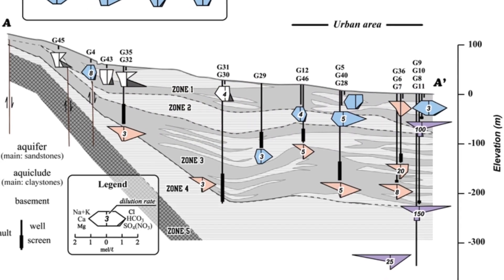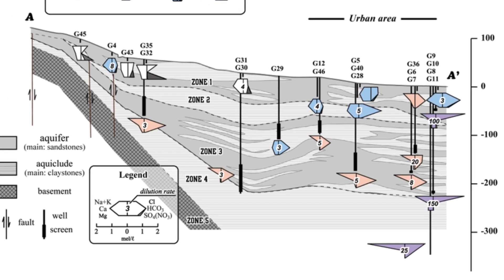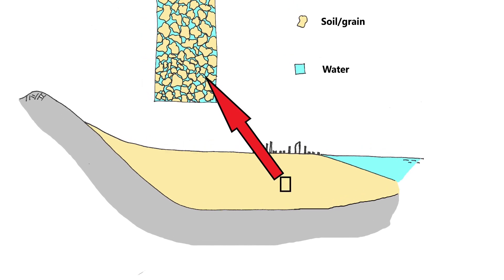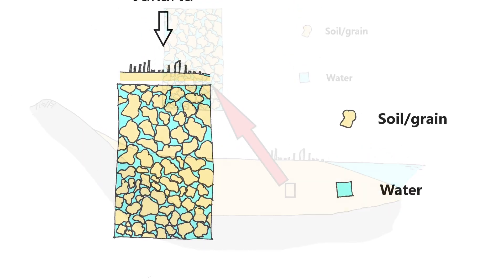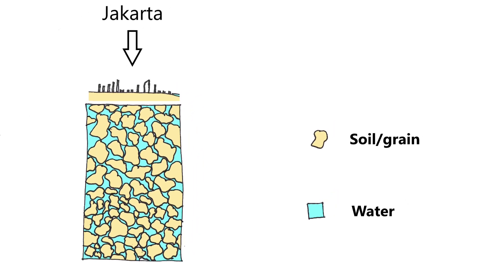Due to clay layers in the basin, new water is slow to enter the Jakarta groundwater basin. Let us focus on a volume of soil deep below Jakarta. We see that the soil volume contains soil grains, and there is groundwater between the grains.